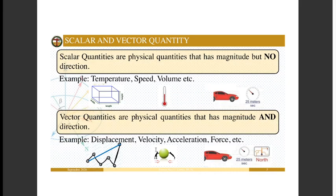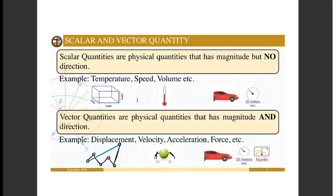For vector quantities, you need to report the direction, not just the magnitude. For example, displacement is a vector quantity. I report displacement as 'one meter north.' One meter north displacement is not equal to one meter south displacement — although they have the same magnitude, they have different directions, so they are not equal. One displacement is to the north and the other is to the south. They cannot be equal if their directions are not equal.